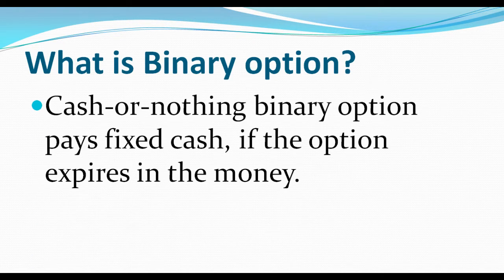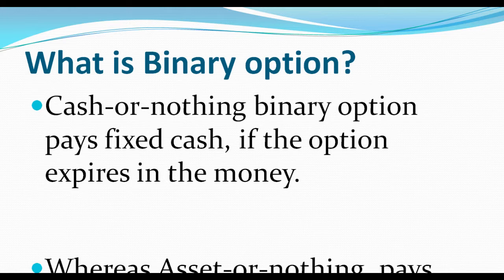Cash or nothing binary option pays fixed cash if the option expires in the money. To make it simple, there is a proposition that you believe the stock will go up. If your proposition is correct, if your assumption is correct, then you are paid fixed cash. If you are wrong, then nothing at all.